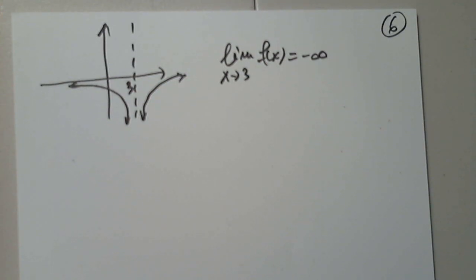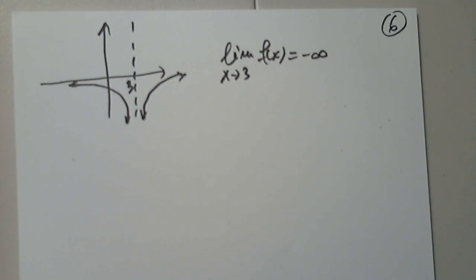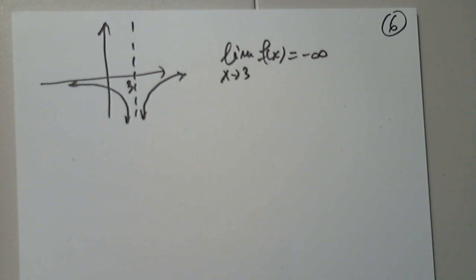What about the limit from either side? It does not exist, of course. What about f of two? The function value is three, where the full point is.